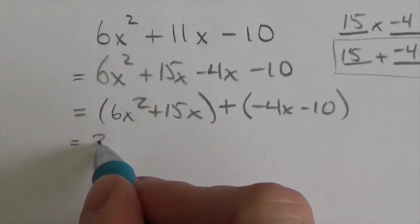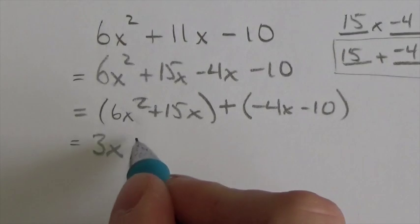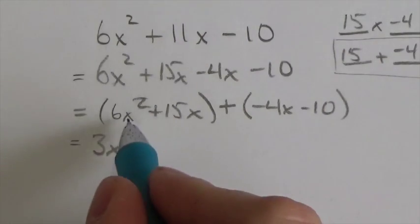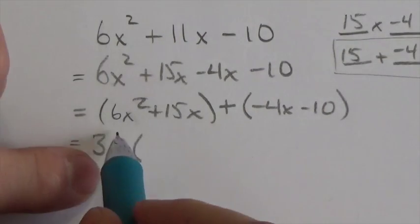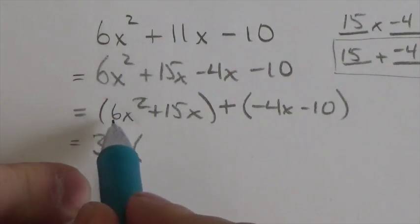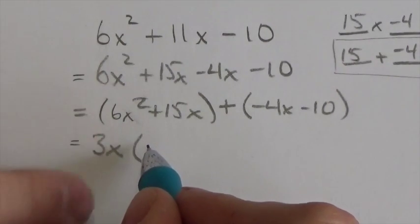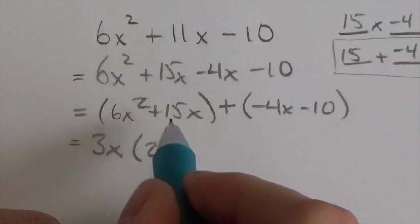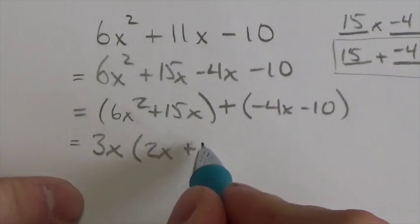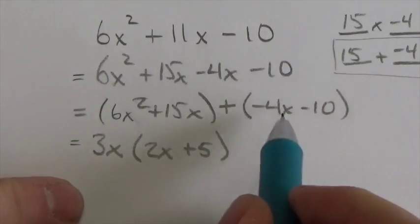Now, what's common to just these two factors? Well, the answer is it's going to be a 3 and an x. That's what I see common to the 6 and the 15, x squared and x. And when I divide that 3x out of those two terms, when I divide it out of 6x squared, I will get 2x. When I divide it out of 15x, I will get a positive 5.